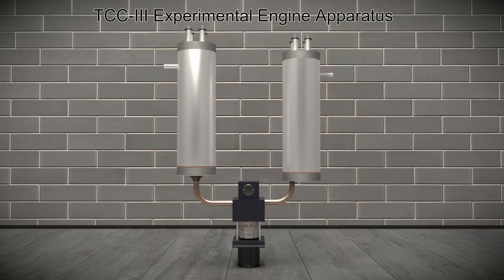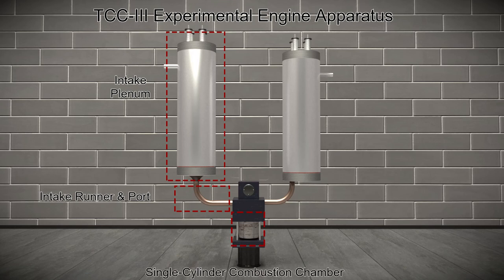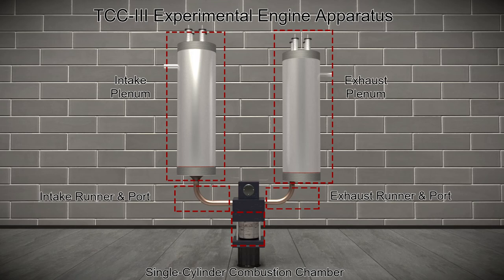The TCC3 engine apparatus consists of the intake plenum, the intake runner and port, a single-cylinder combustion chamber, the exhaust runner and port, and finally, the exhaust plenum.